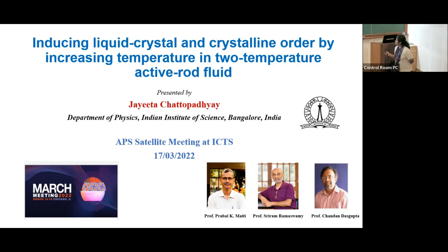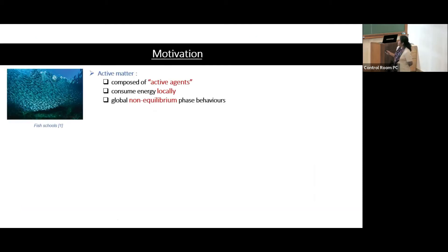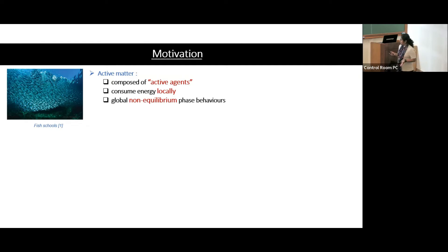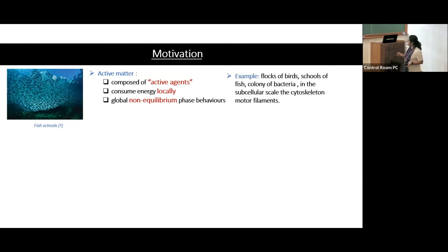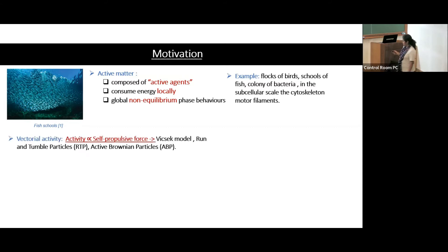From the title, the first question that arises is: what is active matter? Active matter is made of a large number of active agents which have an ability to consume energy locally and show some global phase behaviors. There are plenty of examples — flocking of birds or schools of fish, etc.